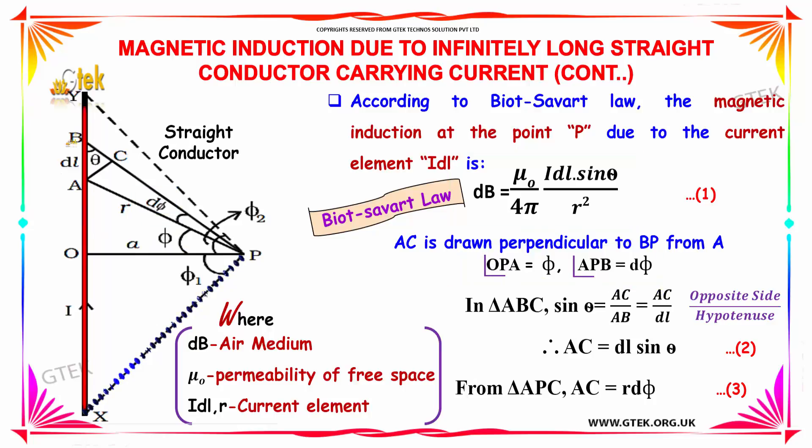From the triangle ABC, sin theta equals opposite side by hypotenuse which indicates AC divided by AB. AB is replaced by dl, so AC equals dl sin theta. And from triangle APC, you got AC equals r dpsi.